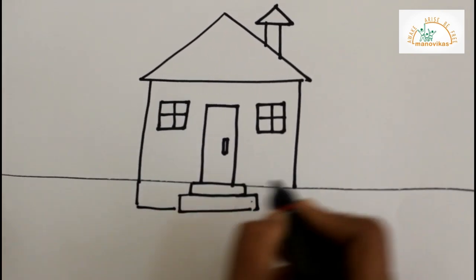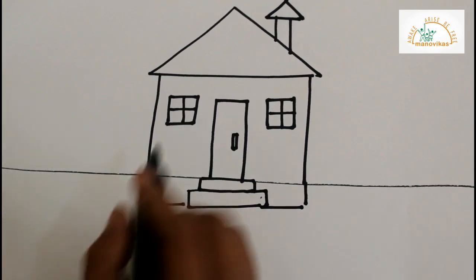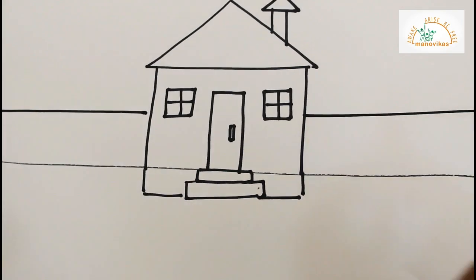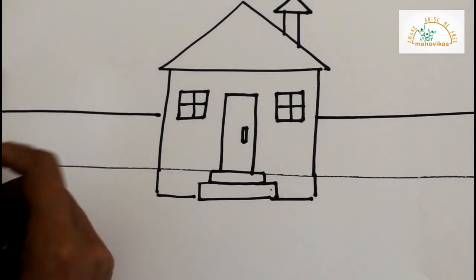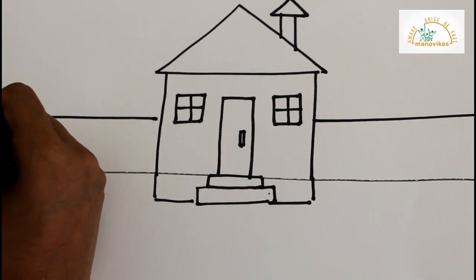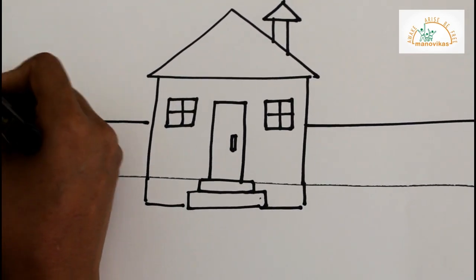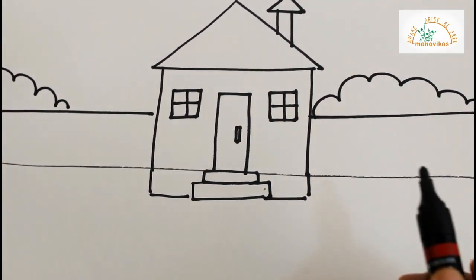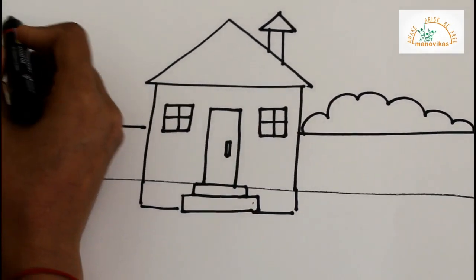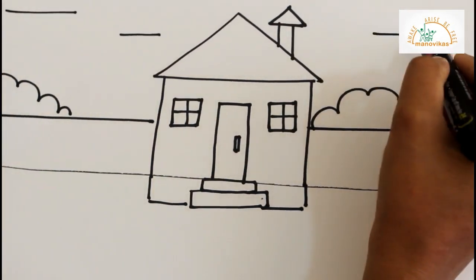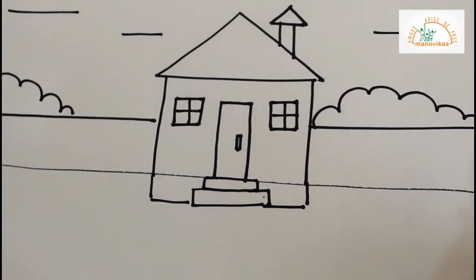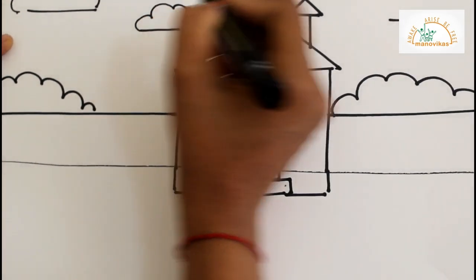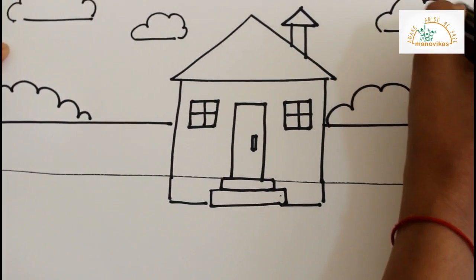We shall join these lines. Draw one more sleeping line above. Use curves to draw bushes. Small sleeping lines. Again draw some curves to form clouds.